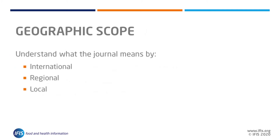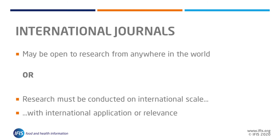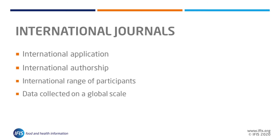The geographic scope is a potentially confusing element and one which benefits from close attention. An international journal may be interested in papers from anywhere in the world, but in what regard? The journal may be happy to receive any and all papers from around the world, focused on any topic and any population. The journal may be interested in papers focused on something relevant to populations local to the author, or the relevance may have a more broadly international relevance or application. International journals may also be interested in research with an international relevance, such as authorship involving an international range of participants and data collected on a global scale.